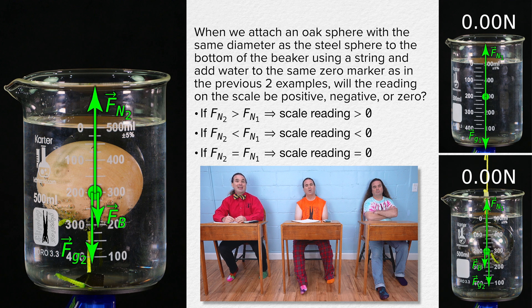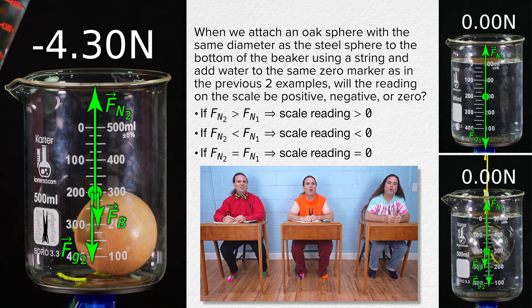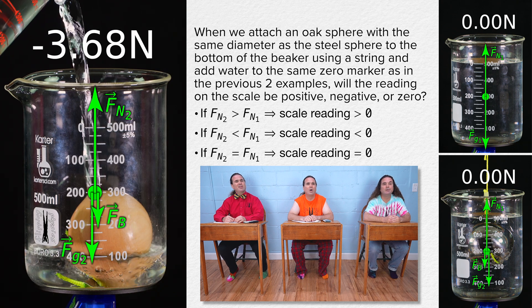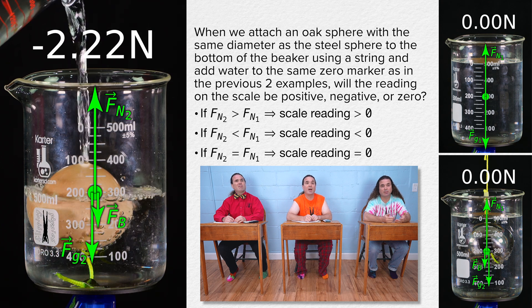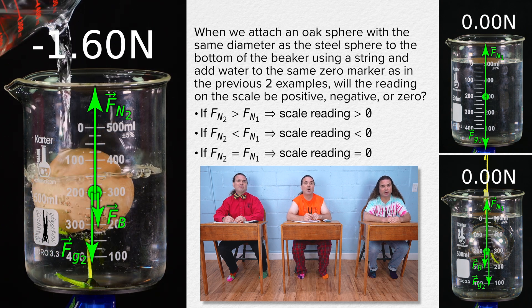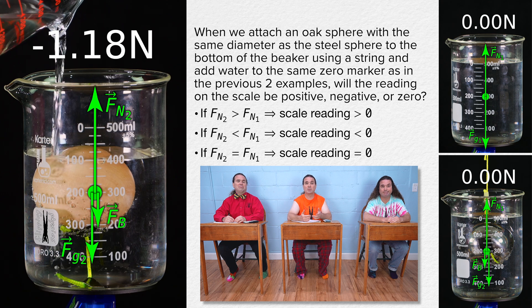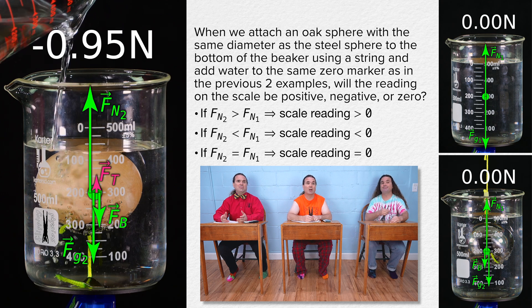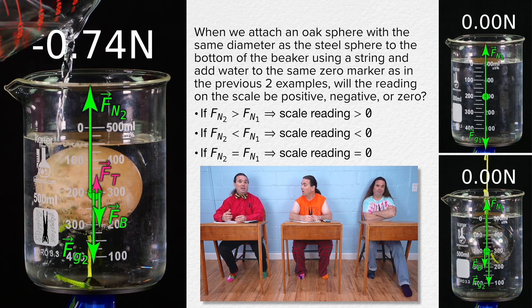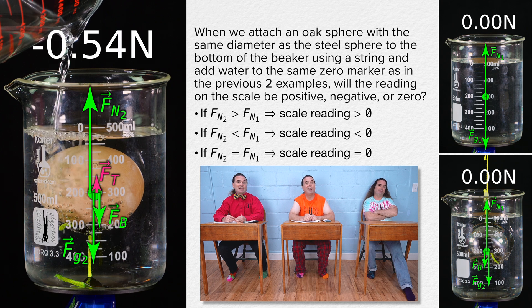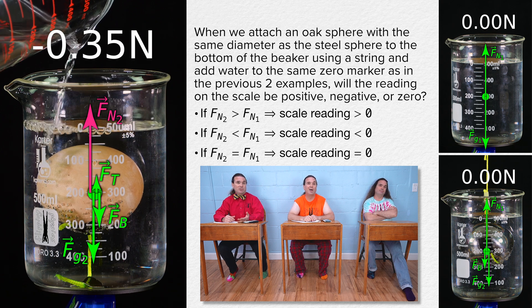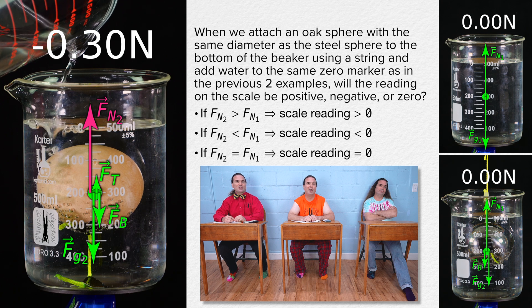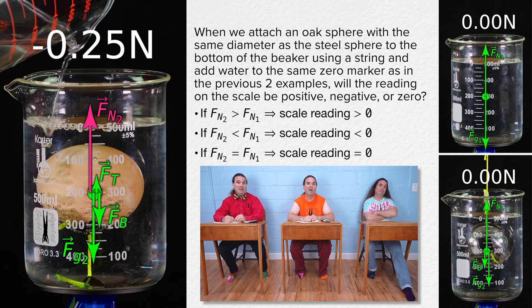There are more forces in the free body diagram — the string. The string pulls up on the beaker. There is an upward tension force acting on the beaker. And because there is an upward tension force acting on the beaker, force normal two is decreased to balance out the forces. Force normal two is less than force normal one. So the reading on the scale should be negative.